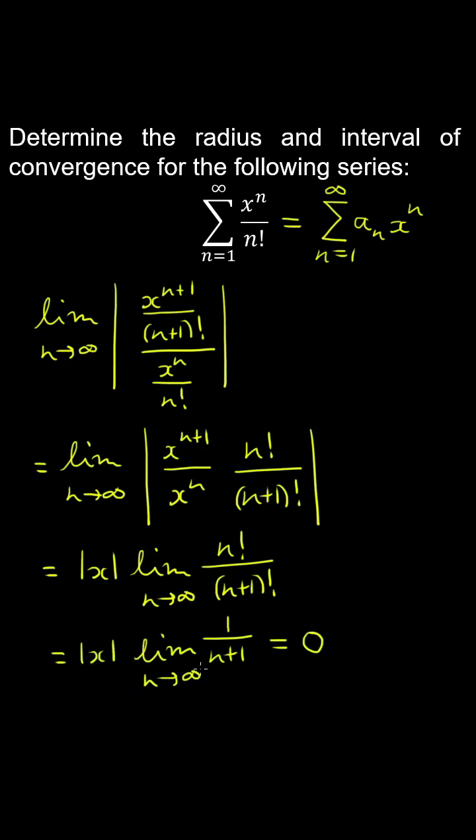Therefore, the limit evaluates to 0. So by the ratio test, rho is always less than 1.